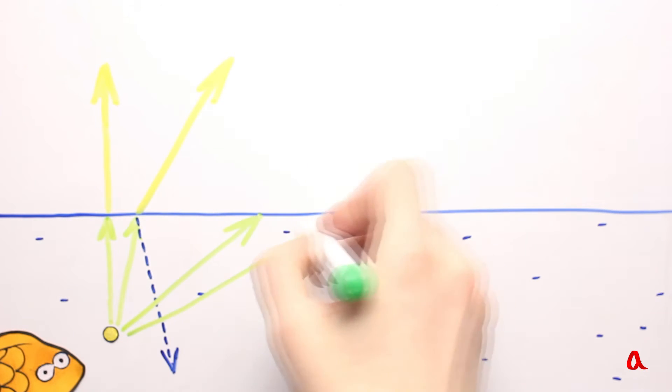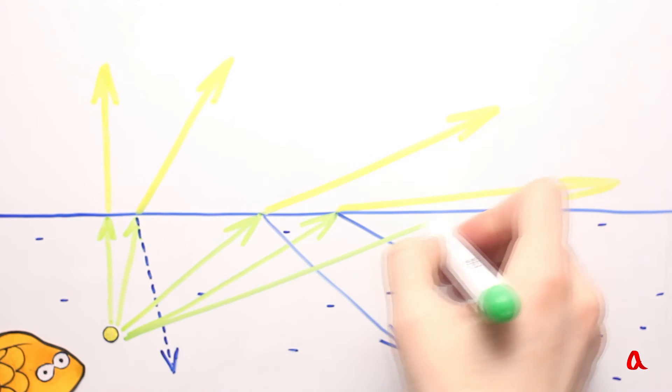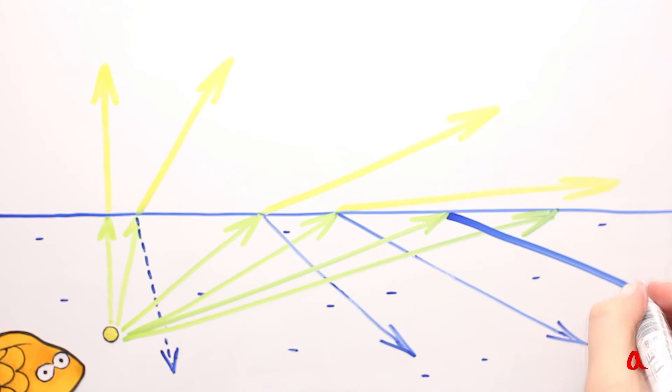But when the angle approaches that of total internal reflection, the beam that goes up starts fading, while the reflected one grows brighter. When the angles are still wider, all the light is reflected into the water.